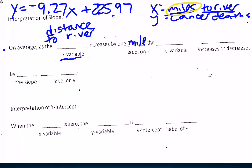The, what's my y variable? Cancer deaths. Number of cancer deaths. And then I'm going to say either it increases or decreases. To find out, I look at my slope. My slope is negative. So I would say it decreases.